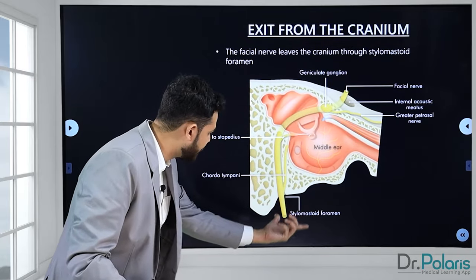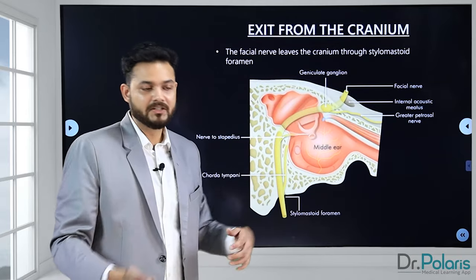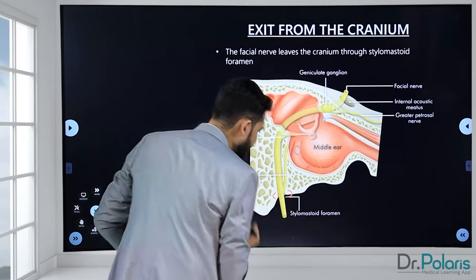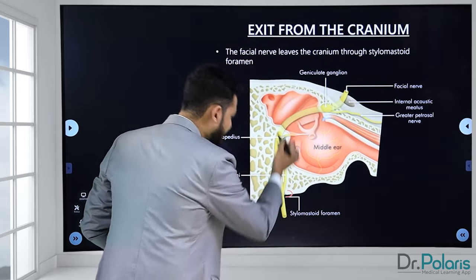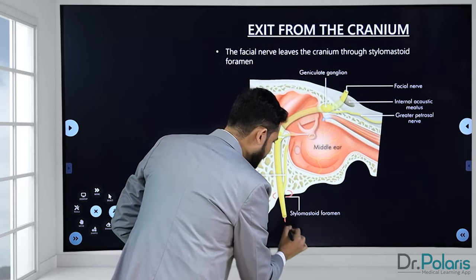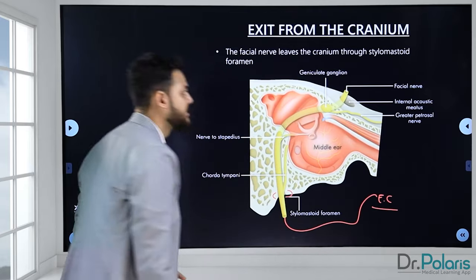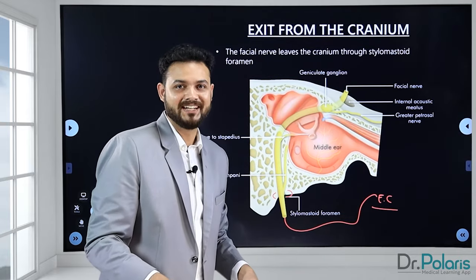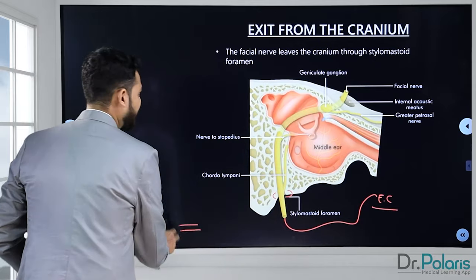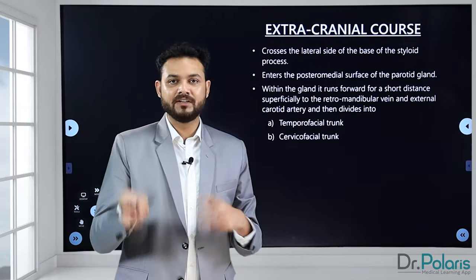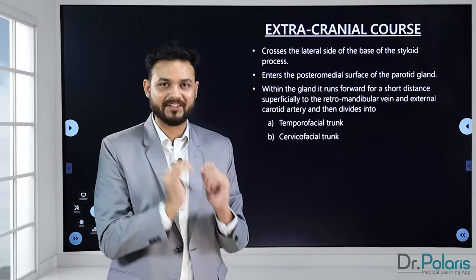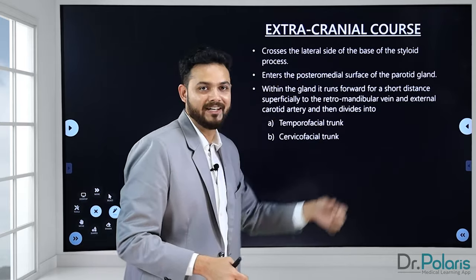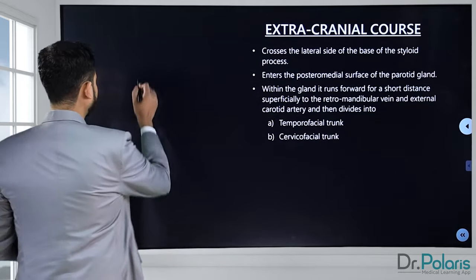Once the nerve exits through the stylomastoid foramen, it becomes the extracranial part and travels toward a gland — the parotid gland. We've dealt with the intracranial and intrapetrous parts extensively. Now let's focus on the extracranial course: how this extracranial part is producing those facial expressions.